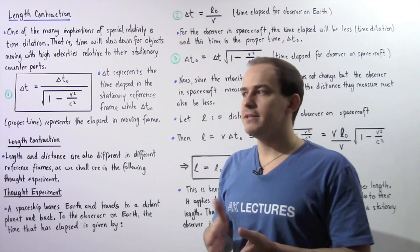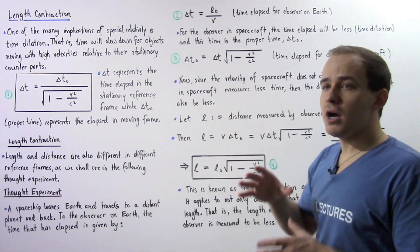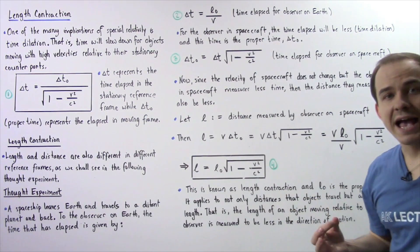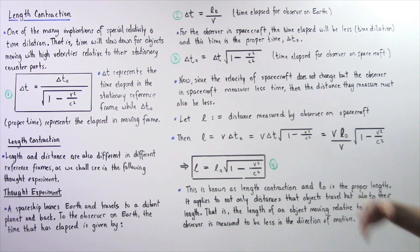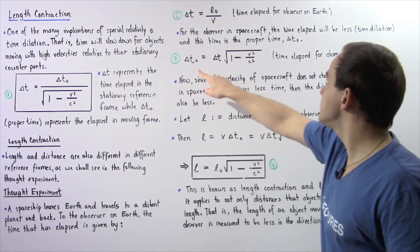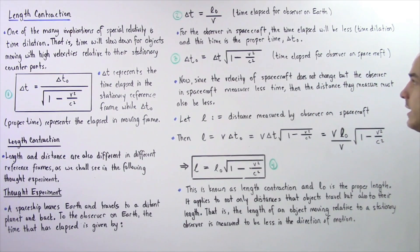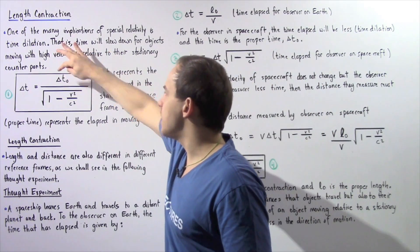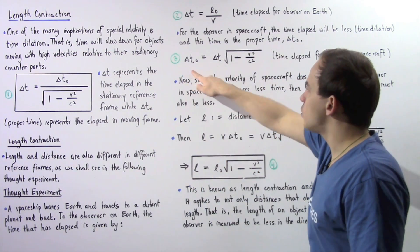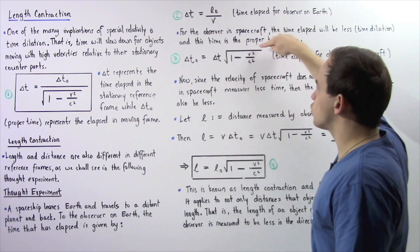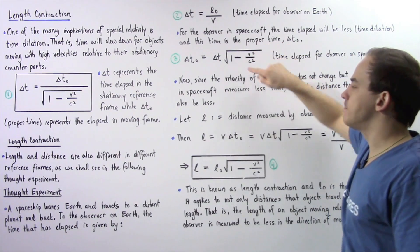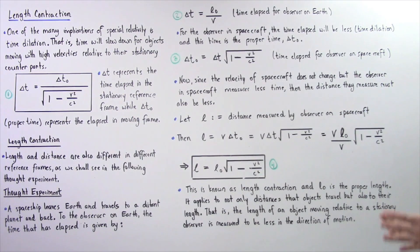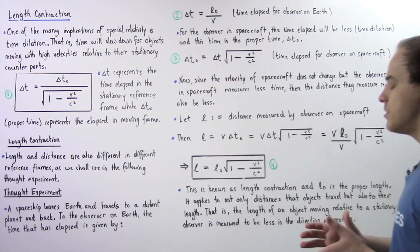For the observer inside the spacecraft, the time elapsed is less, as a result of time dilation. This time, known as the proper time, is given by equation three. We rearrange equation one and solve for delta t naught: the proper time equals delta t multiplied by the square root of one minus v squared divided by c squared. Equation three gives us the time elapsed measured by the observer on the spacecraft.